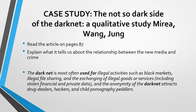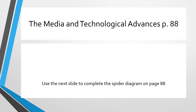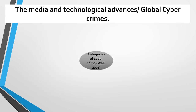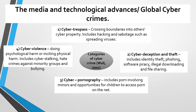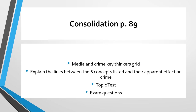This brings us to the last page, page 88, on technological advances. Technology has changed the way crime can occur. We see: cyber trespass — crossing boundaries into other people's cyber property; cyber theft and deception, which has become bigger and more prominent; cyber pornography; and cyber violence. So we see this changing nature of crime and deviance because of technology, which has both pros and cons. Read the bottom of page 88, then attempt the consolidation tasks on page 89.